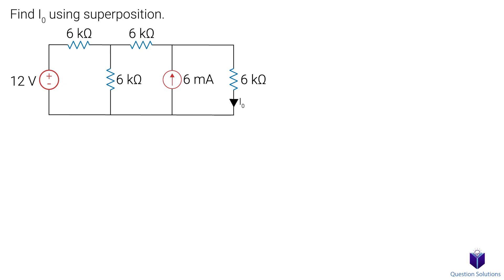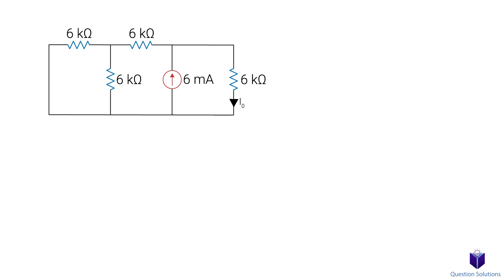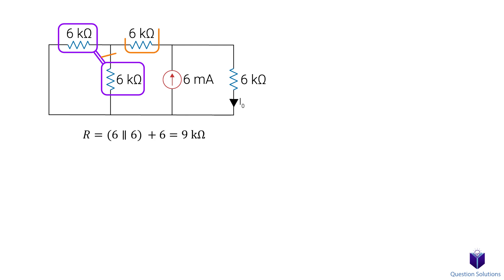Let's start with a nice and simple example. Here, we need to find I0, so the current flowing through this 6k ohm resistor using superposition. The first step is to pick a source that we want to remove. Let's pick the voltage source first. Since it's the voltage source we're removing, we replace it with a short circuit. From this point on, the method you want to use to solve for the current is completely up to you. But we can easily solve it by noticing that these two resistors are parallel to each other, and the combination of that is in series to this resistor. So our circuit would look like this, which is a single node pair circuit.